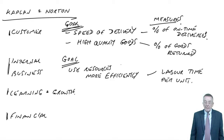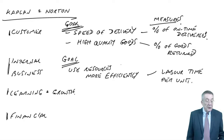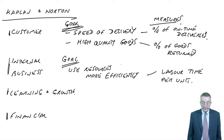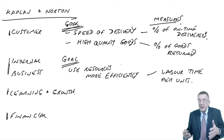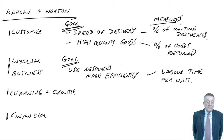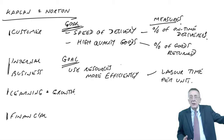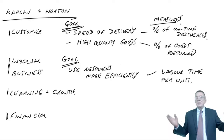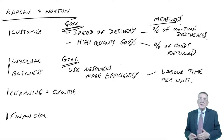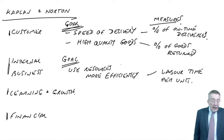Learning and growth perspective — rather similar to one of Fitzgerald and Moon's six measures. How can we continue to improve and create future value? We've got to think of new ideas to keep things going in the future. An example measure is the number of new products introduced. We need to keep thinking of new products; if we simply rely on existing products, there'll come a time when somebody else steals our market. Another measure is time to market for new products — the faster we can get them to market, the better.